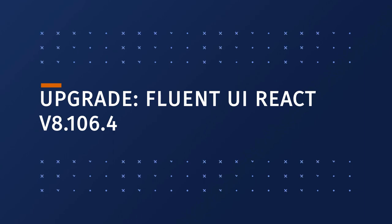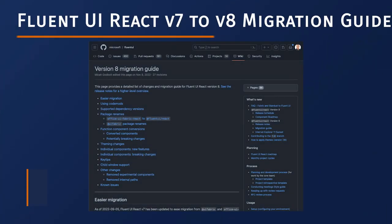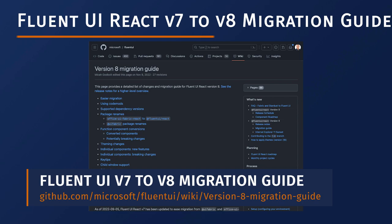Unlike some of those other minor dependency updates, this next one is a big update. Microsoft updated the version of Fluent UI React from version 7 to version 8 in this SharePoint Framework release — specifically Fluent UI React 8.106.4. If you use Fluent UI React in your SharePoint Framework projects and want to migrate to the new version 8, you may run into a couple of issues because it's a major release. The Fluent UI React team has provided a migration guide to go from version 7 to version 8, and I'll include a link in the notes below.